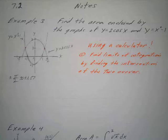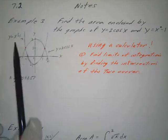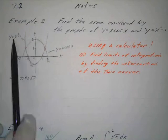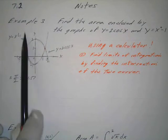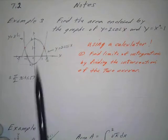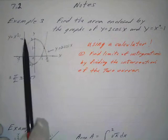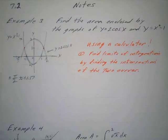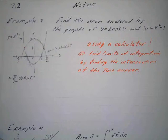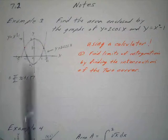And then we also have y equals x squared minus 1. That's just a regular parabola shifted down one. So when we think about this, this would be my top curve and this would be my bottom curve. Then that's no problem. And we want to use a calculator to find the limits of integration.